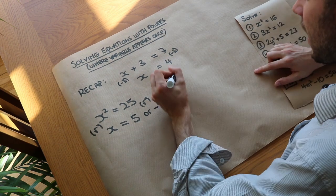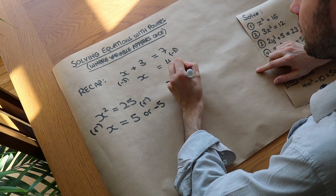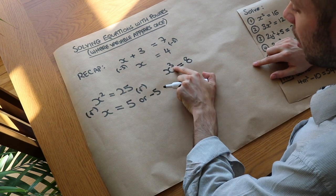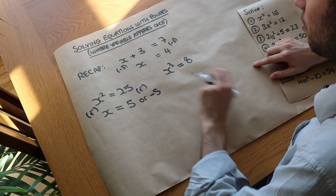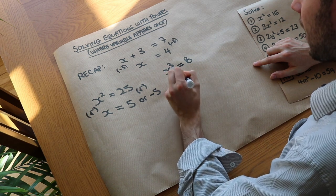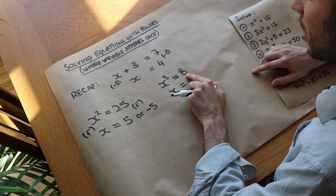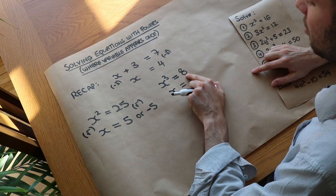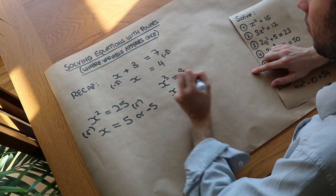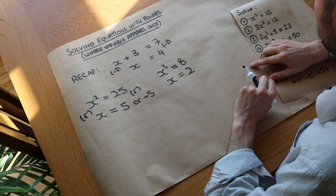If we had x cubed equals 8, we do the opposite of cubing, which is cube rooting. So we cube root both sides. Cube rooting asks: what number times itself times itself gives you 8? The answer is 2, because 2 times 2 times 2 is 8.